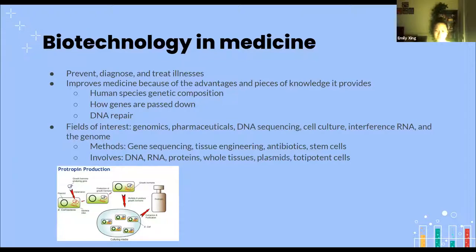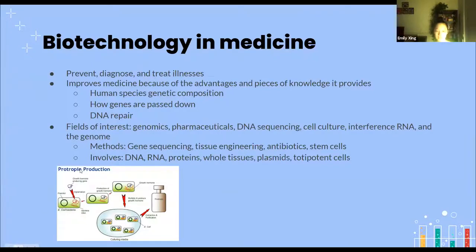Totipotent cells — stem cells are either totipotent or pluripotent, meaning they have the ability to turn into any kind of cell in the body. Different types of cells include blood cells and skin cells. In the bottom left corner is an example of cell culture: you start with one cell, grow more in the lab, and eventually get a whole product.